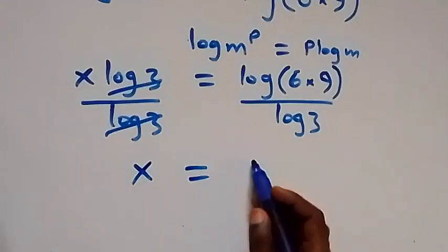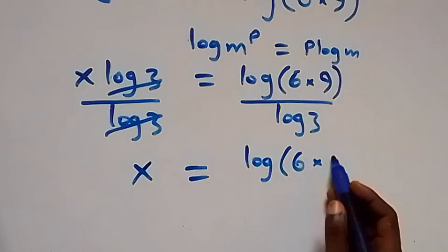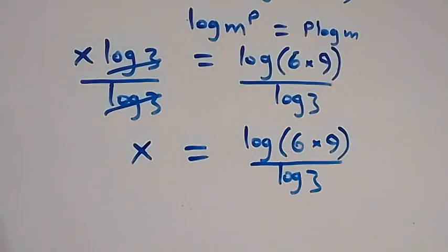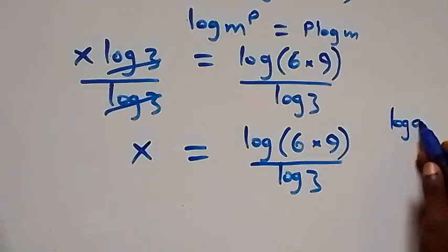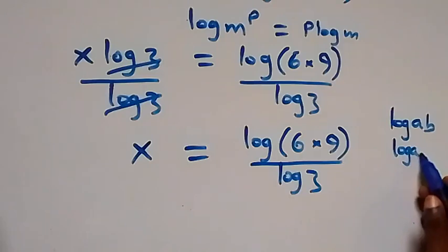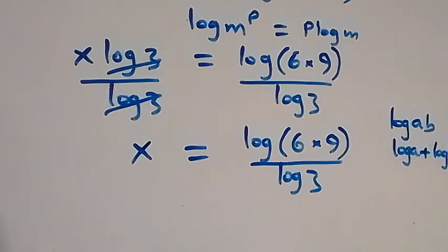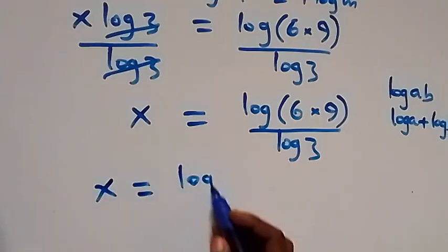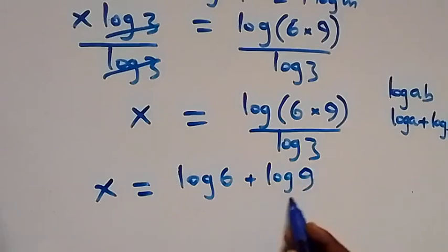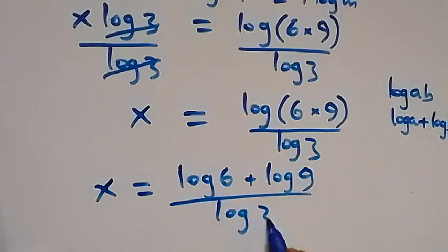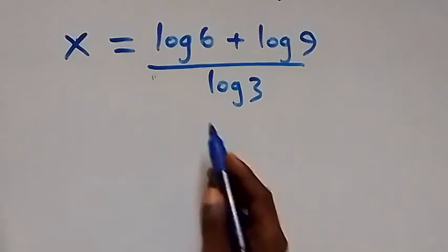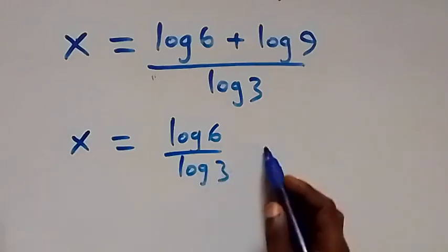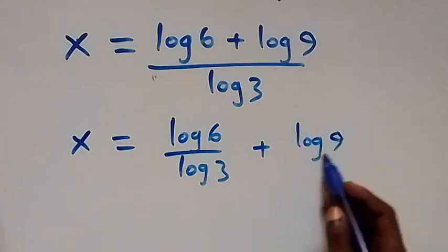Dividing both sides by log 3, we get x equals log(6 times 9) divided by log 3. Then we apply the law of logarithms: log(a times b) equals log a plus log b. This becomes x equals log 6 plus log 9, all divided by log 3. We can then separate these fractions: x equals log 6 over log 3 plus log 9 over log 3.